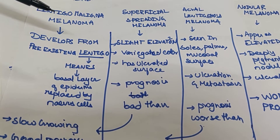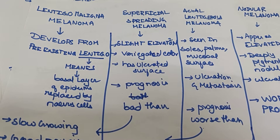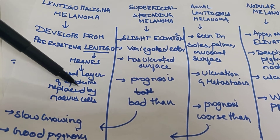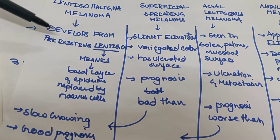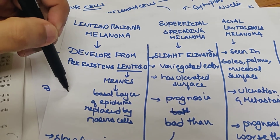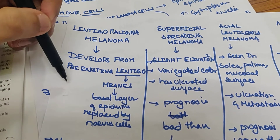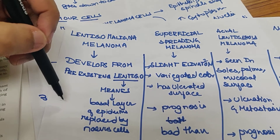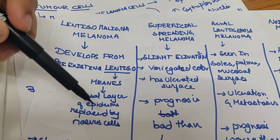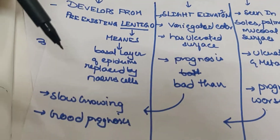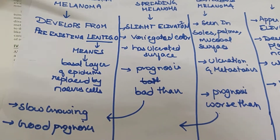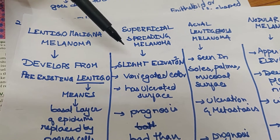Lentigo malignant melanoma develops from a pre-existing lentigo. Lentigo is a type of nevus in which the basal cells of the epidermis are replaced by nevus cells. The skin has stratified squamous epithelium — on the basement membrane are basal cells, then cuboidal cells, and finally squamous cells. The basal cell layer is replaced by nevus cells, from which lentigo malignant melanoma develops. It is slow growing and has good prognosis.